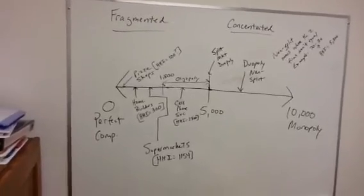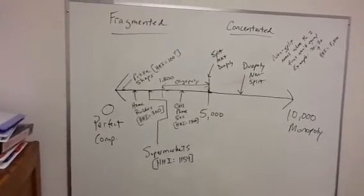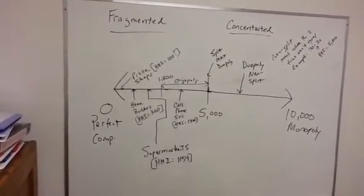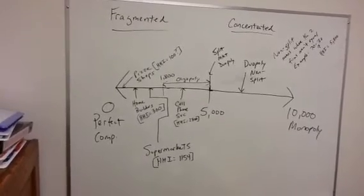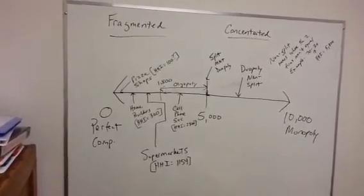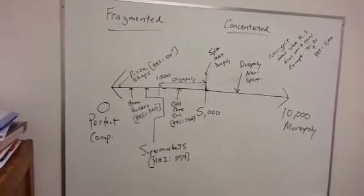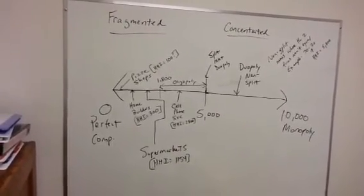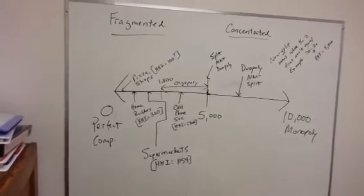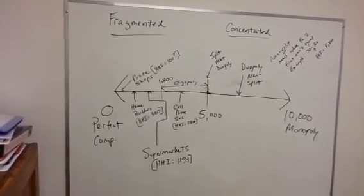You'll notice I also included the number 1,800, and that is where the Department of Justice antitrust labels moderately concentrated and where we can start to say that oligopolies begin. And the higher the number within that 1,800 to 5,000, clearly the more oligopolistic and potentially dangerous that the industry would be.